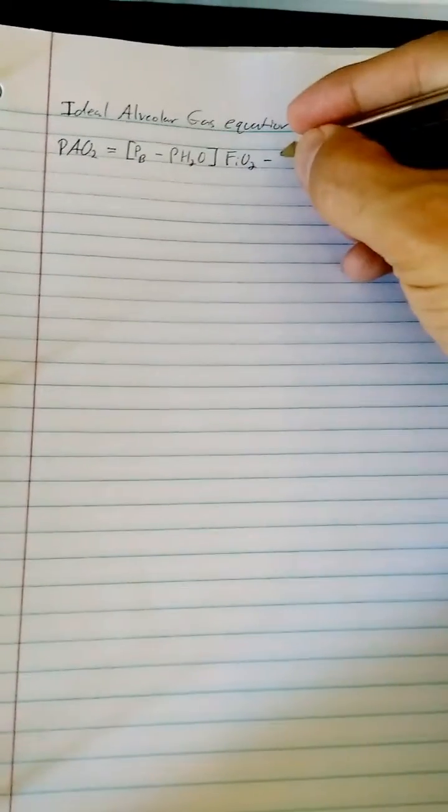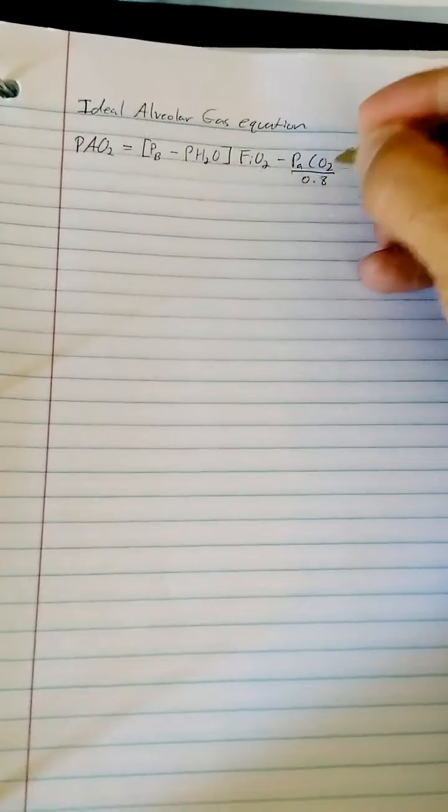So PAO2 equals the barometric pressure minus the pressure of water vapor, multiplied by the FiO2, minus the pressure of arterial CO2, and that is divided by 0.8.